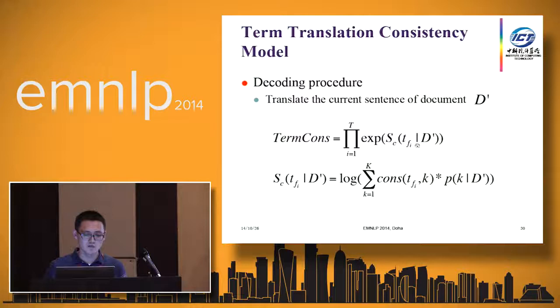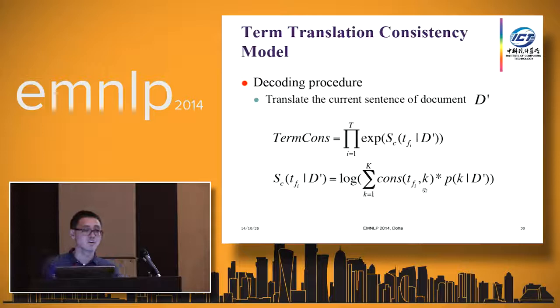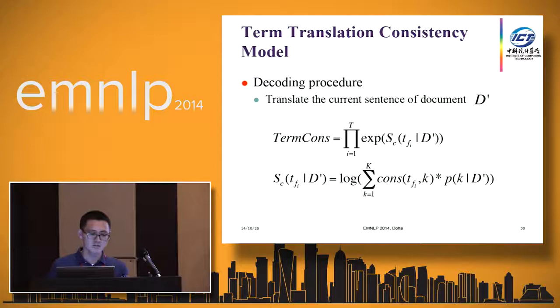How to compute this probability? We use maximum likelihood estimation from the training data. Here, IPE represents the number of documents where TI occurs, and the number of unique translations of TI in document I, and QF is the frequency of the translation of TI in those documents. Q is a smoothing parameter. We can use this score to represent the strength of term translation consistency. The upper formula is the term translation consistency model. For sentences that contain multiple terms, we compute each term's translation consistency score conditioned on the document. This consists of two parts: the topic-conditioned translation consistency score, and the document topic distribution obtained with LDA. We incorporate this model into the log-linear framework of machine translation as a feature.